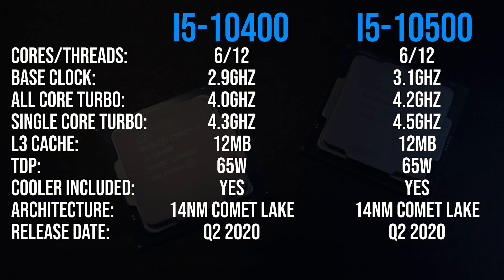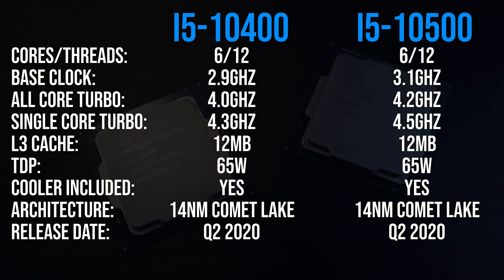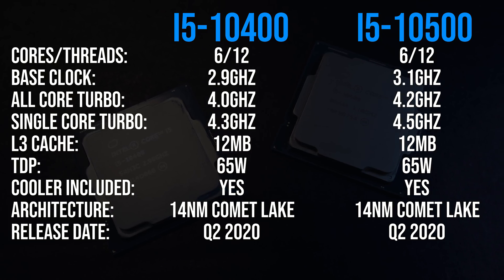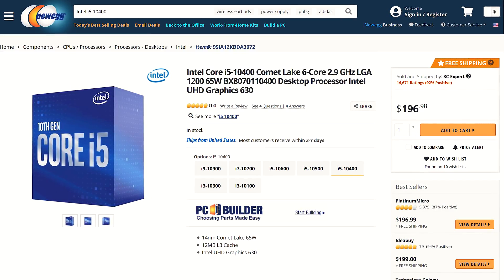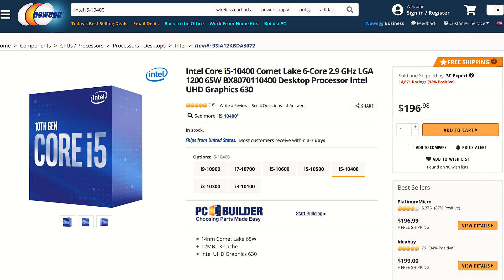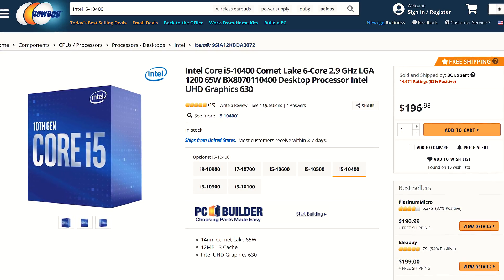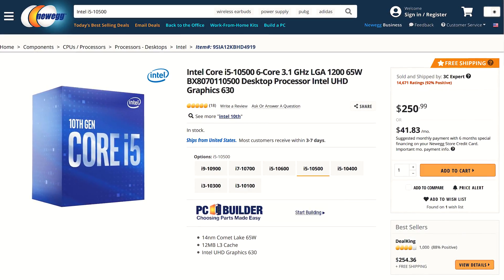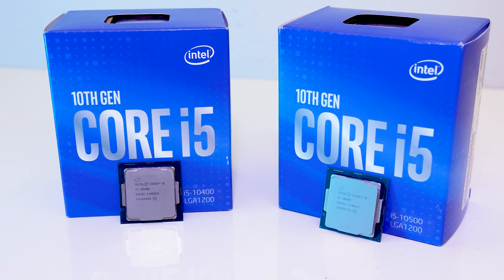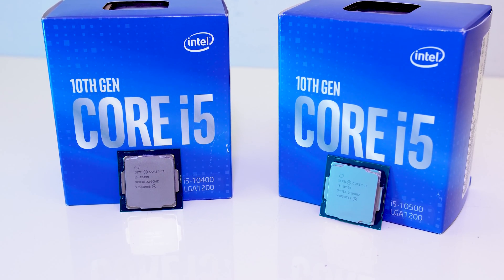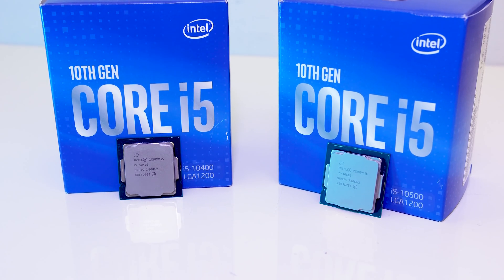Looking at the spec differences between these two chips, they've both got 6 cores with hyperthreading, 12MB of cache, and a 65-watt TDP. The key difference is in the clock speeds — the 10500 is 200MHz faster. Looking at current prices on Newegg, the 10400 is available for $197 USD while the 10500 is $251, but this may change over time as 10th gen availability is still scarce. You can check updated prices linked in the description.